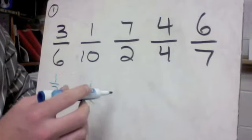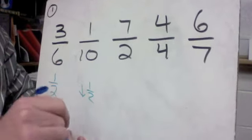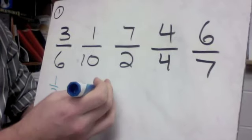7/2. Two over two would be exactly one whole. So if we had seven halves, that's going to be more than one.